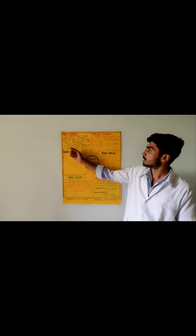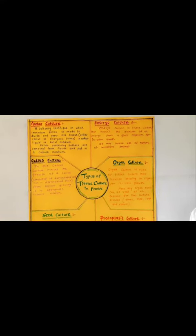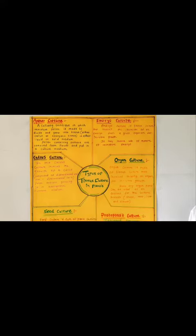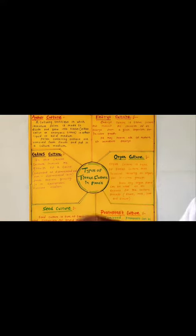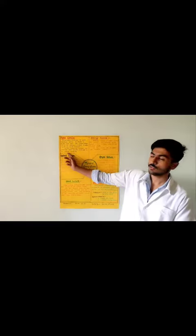So anther culture, a culture in which immature pollen is made to divide and grow into tissue which is either callus or embryonic tissue in either liquid or solid medium, in which the pollen containing anthers are removed from the flower and put in a culture medium.